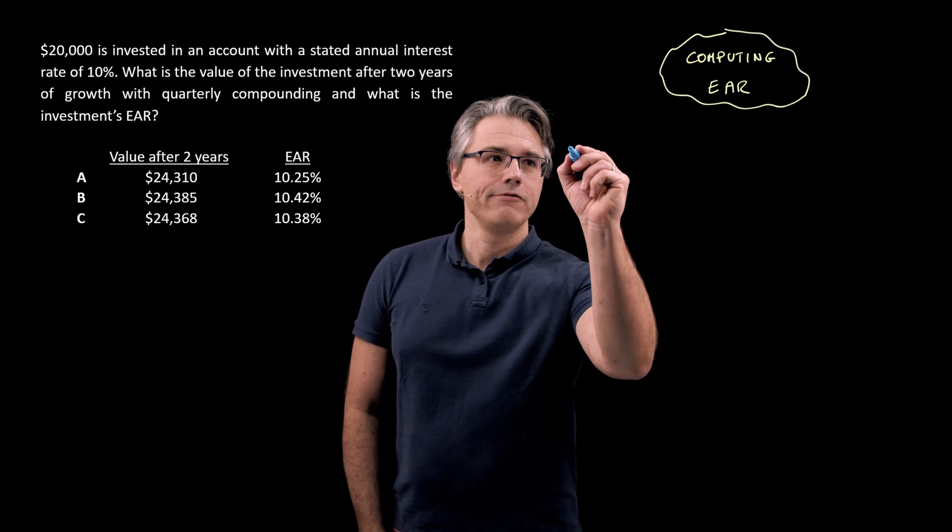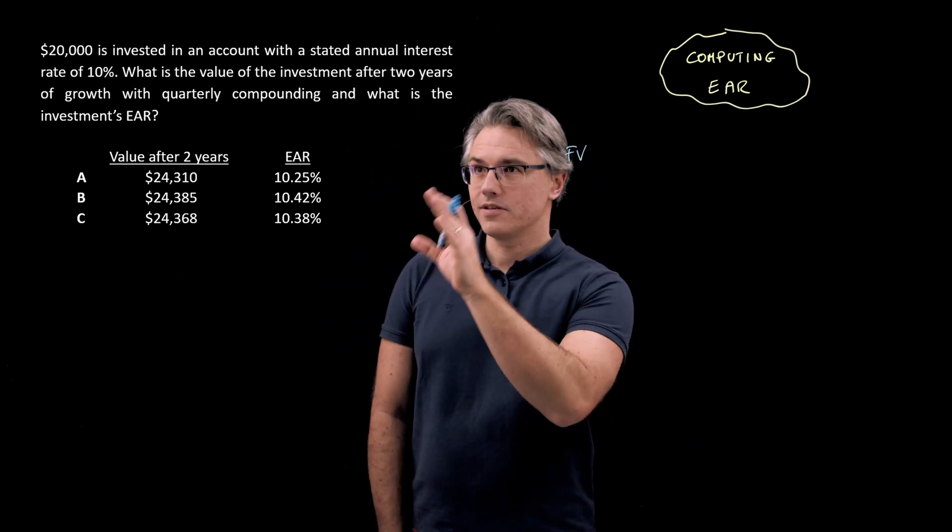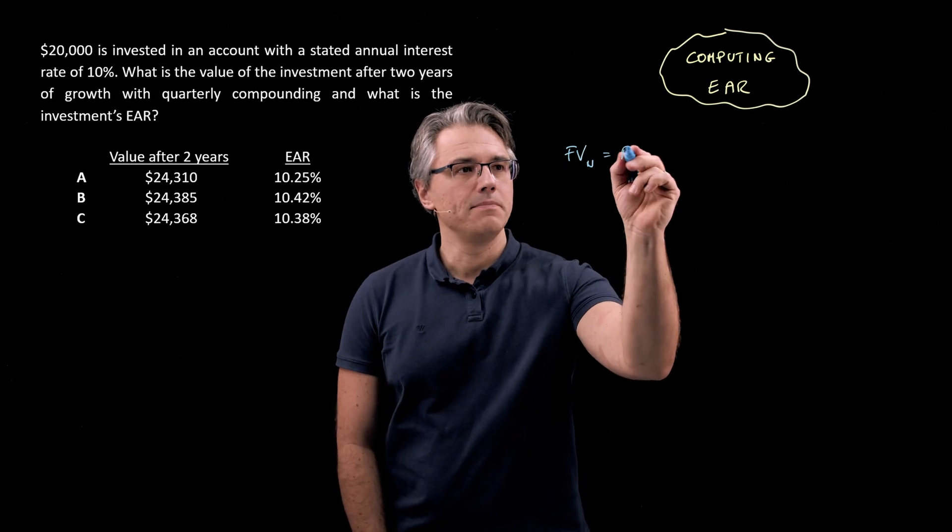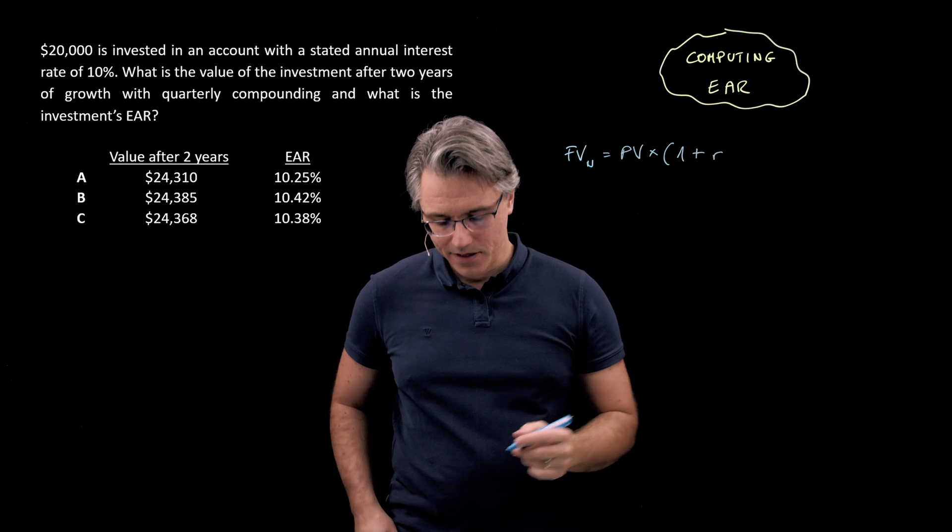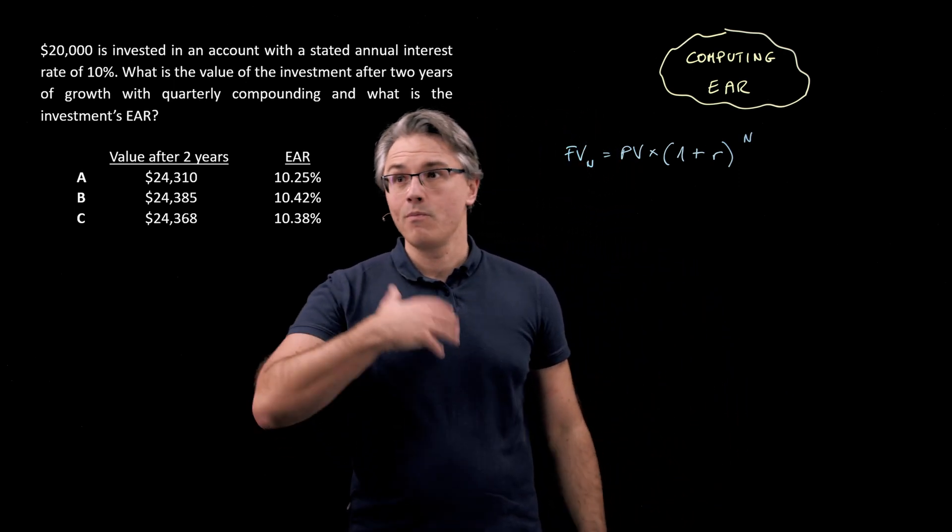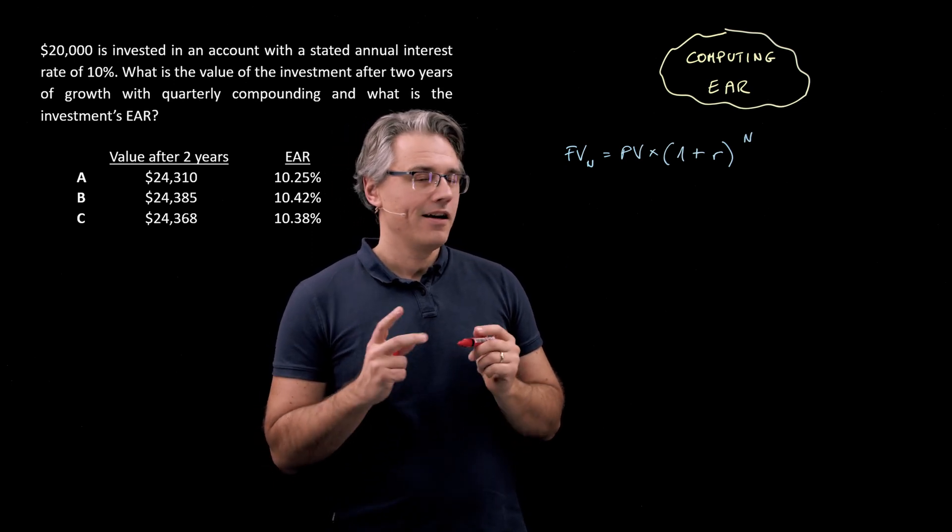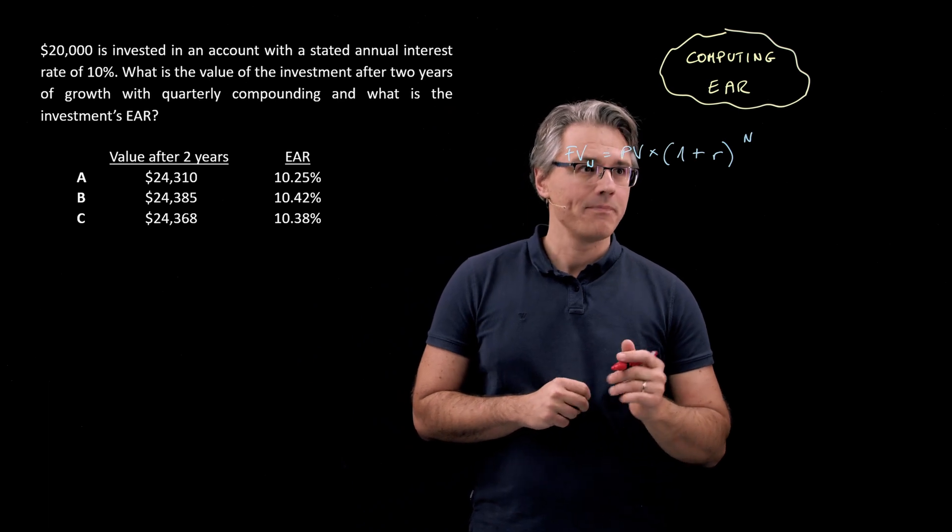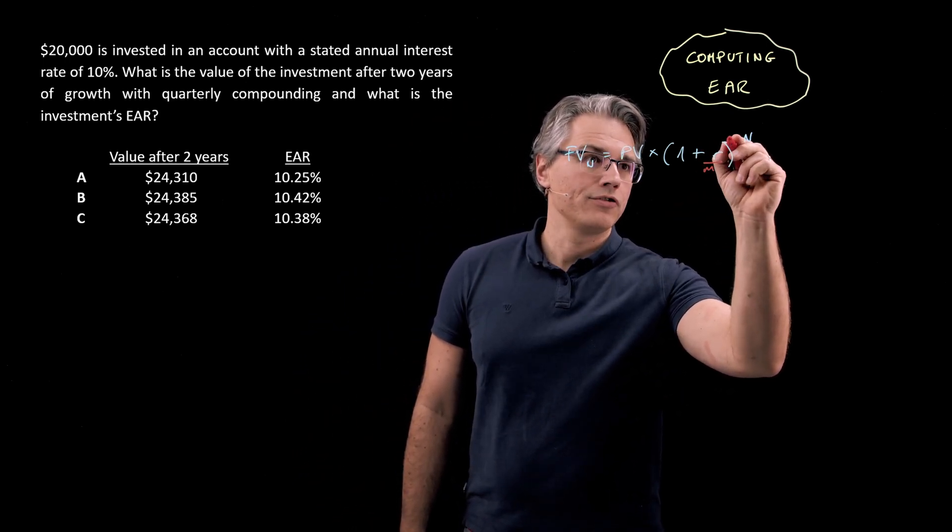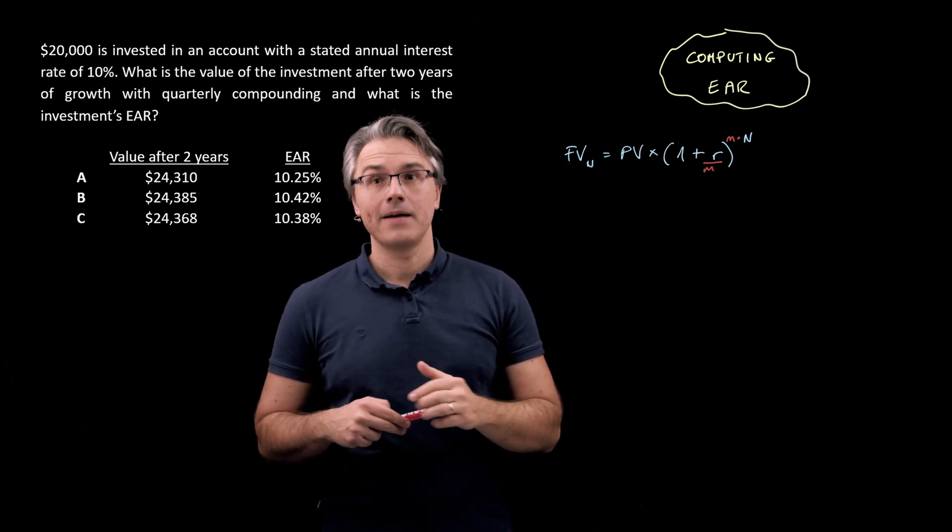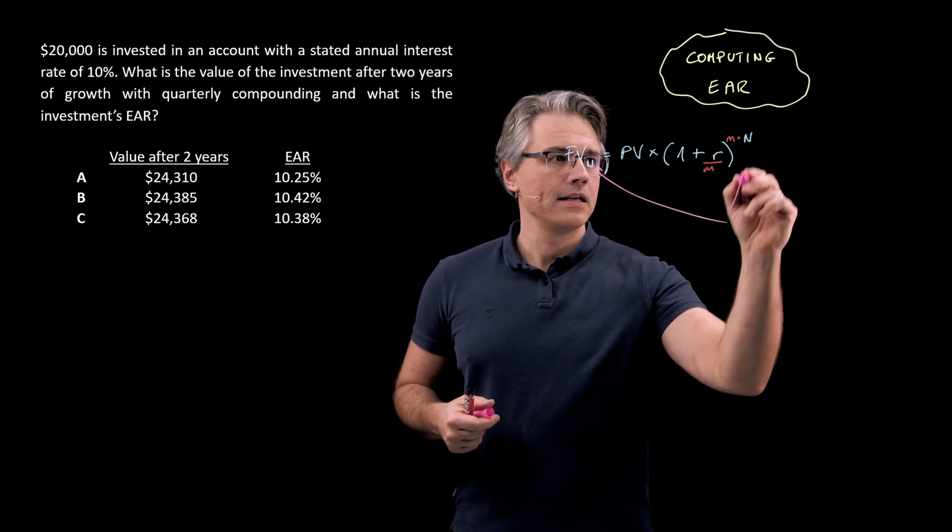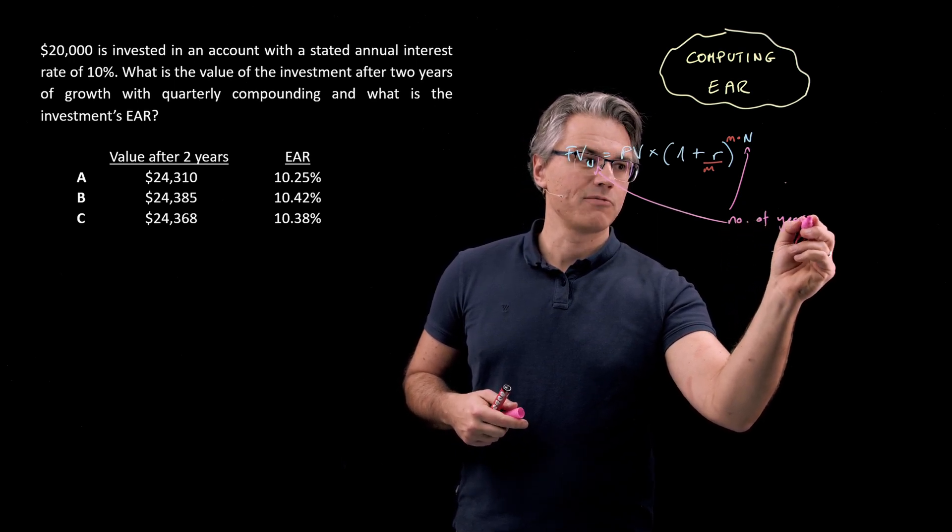So in this case the future value at point N which is going to be after two years of growth, but I'm going to give you a generic formula. So FV_N is going to be PV times 1 plus R to the power of N, but given the more than annual frequency of compounding I'm going to add an additional term here. I'm going to call this M. The rate of return ought to be divided by this term M and the term M should also appear up here in the power or the exponent.